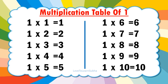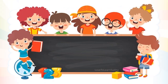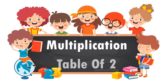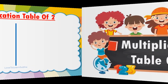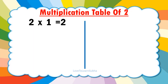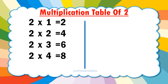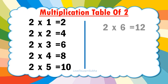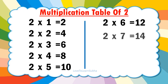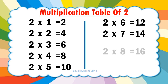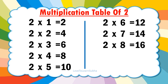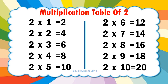1 10s are 10. Multiplication table of 2. 2 1s are 2, 2 2s are 4, 2 3s are 6, 2 4s are 8, 2 5s are 10, 2 6s are 12, 2 7s are 14, 2 8s are 16, 2 9s are 18, 2 10s are 20.